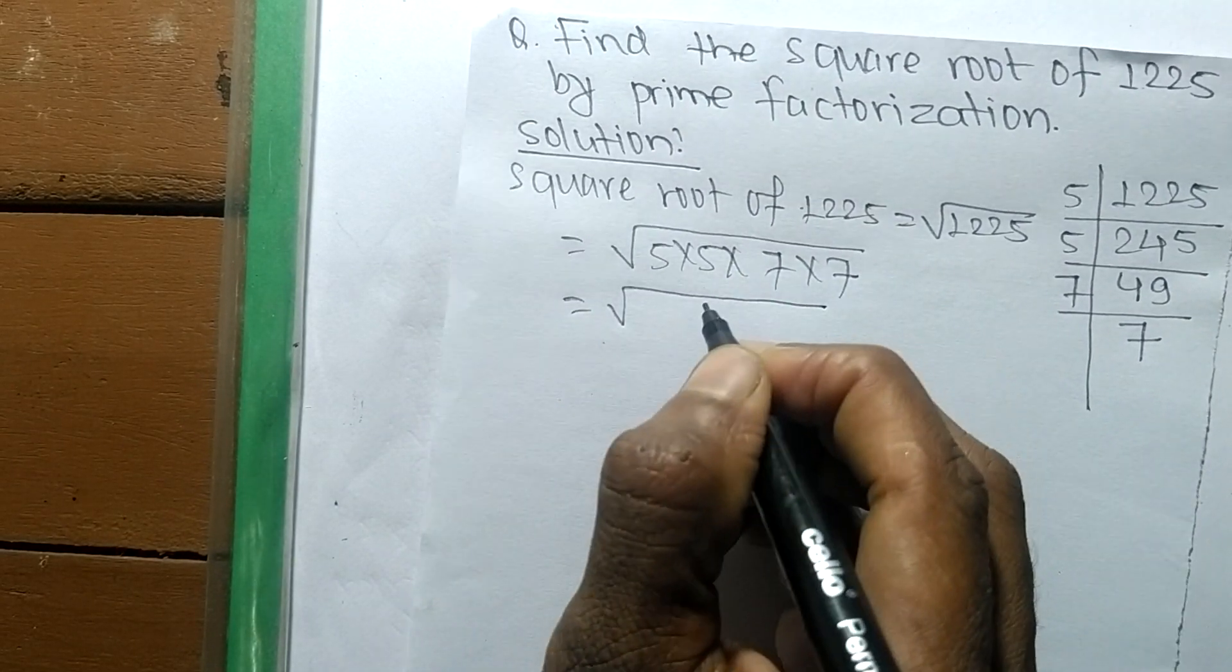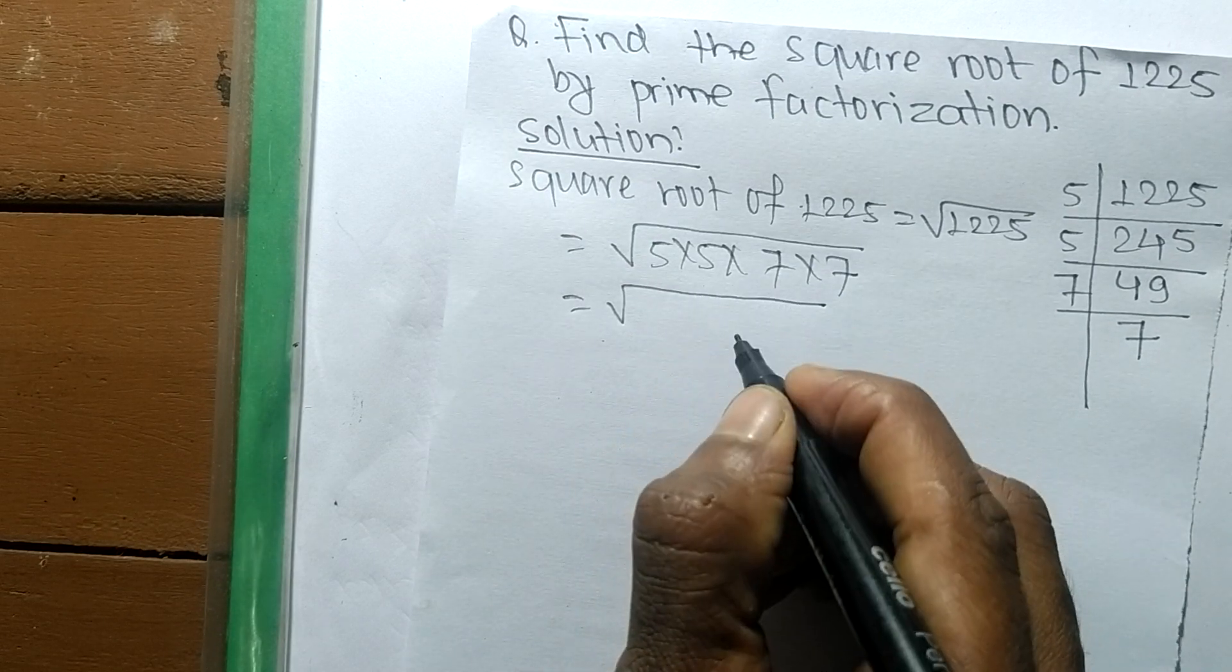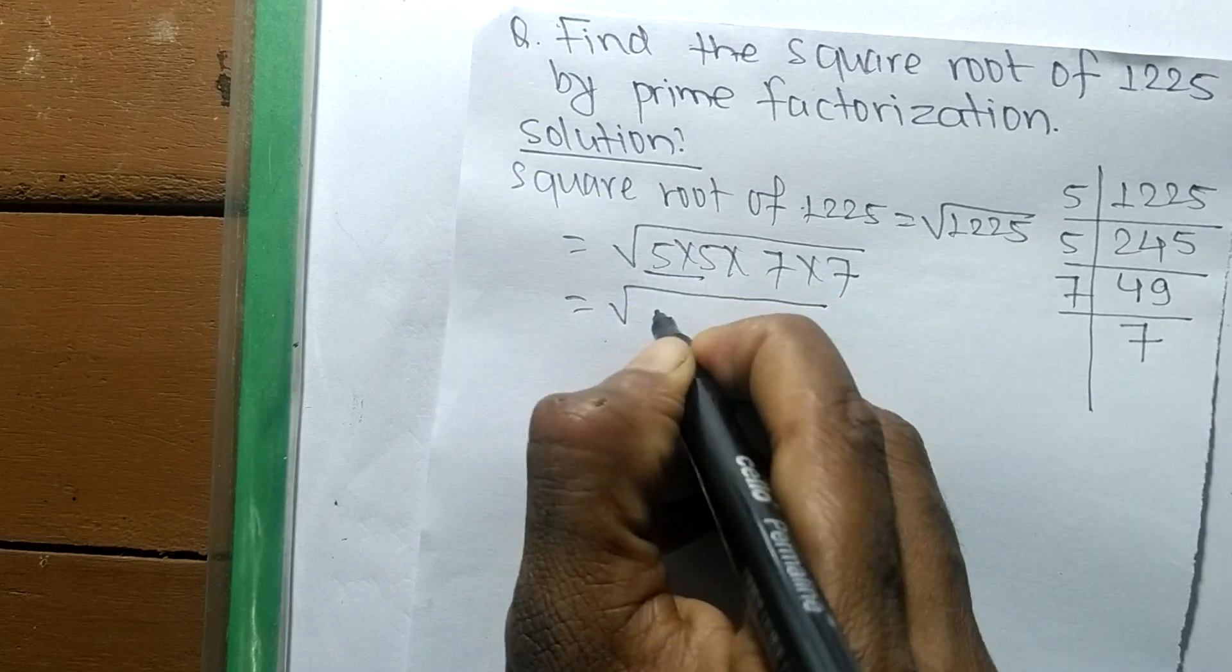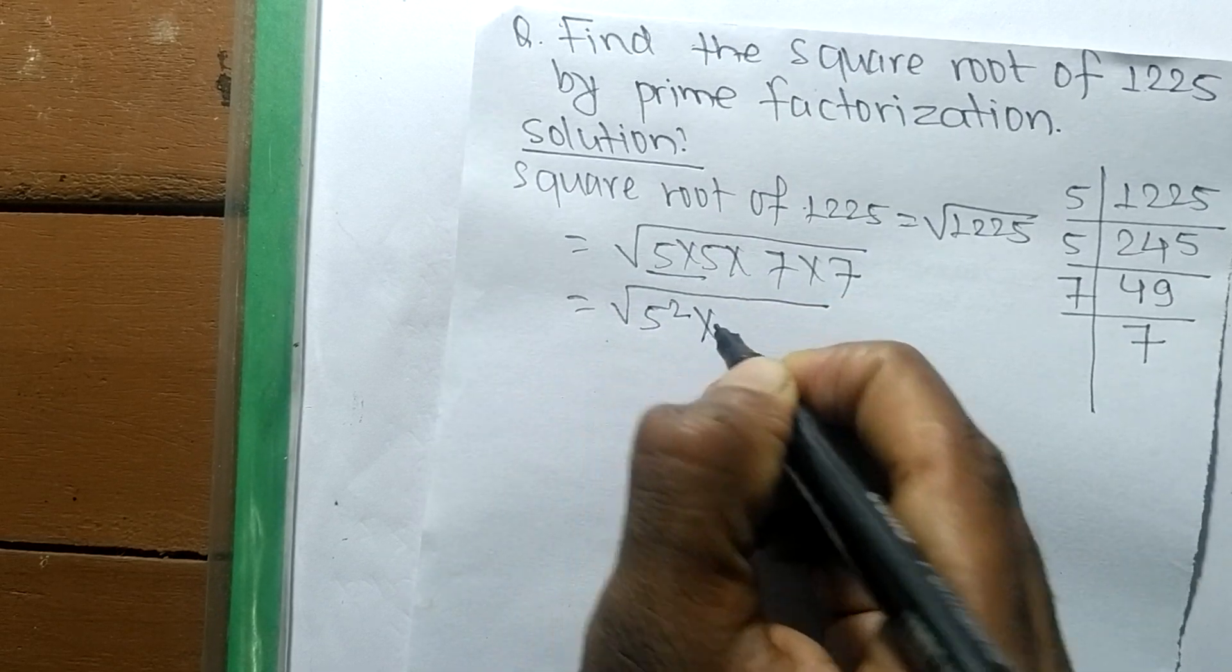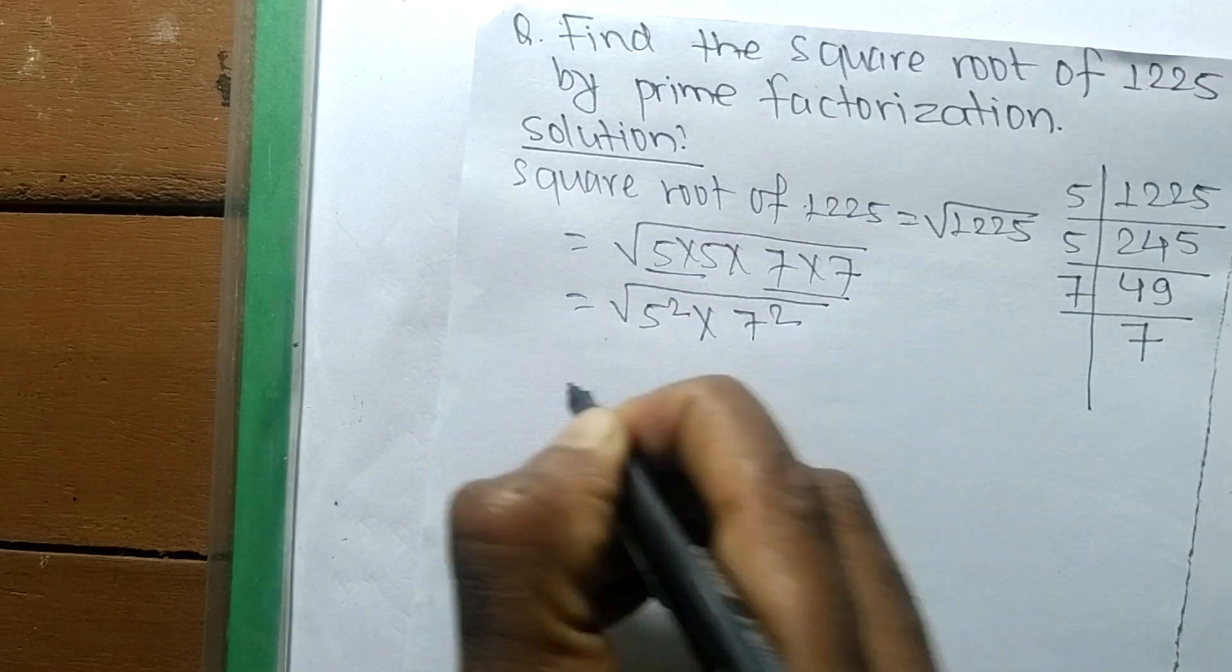So after writing the prime factors, now we make the square root of these prime factors. 5 times 5 means it is 5 squared, like 7 times 7 is 7 squared.